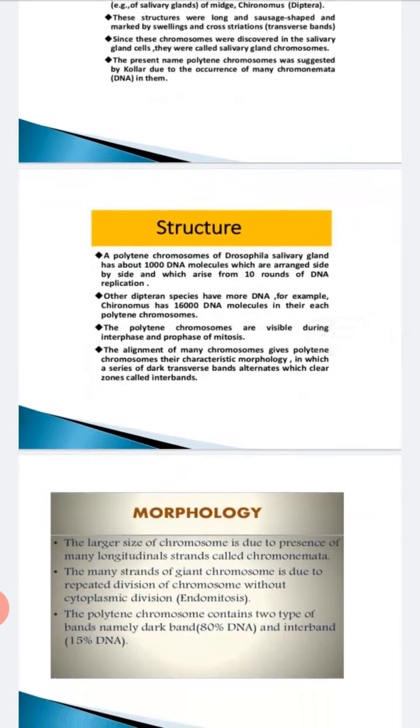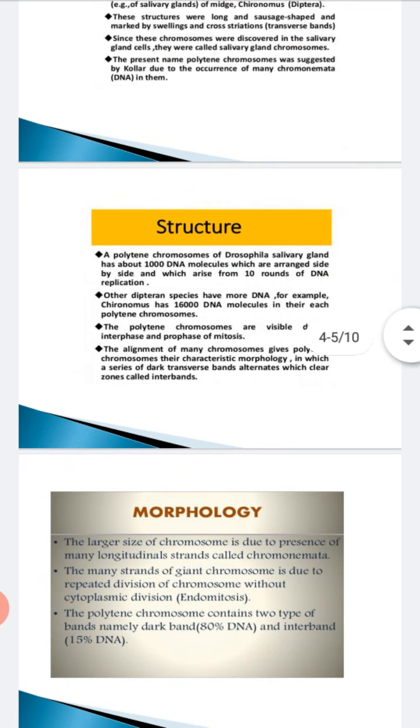Describing the morphology, the large size of chromosomes is due to presence of longitudinal strands called chromonemata. The many strands of giant chromosome is due to repeated division of chromosomes without cytoplasmic division. Repeated division of chromosomes but no division in cytoplasm.